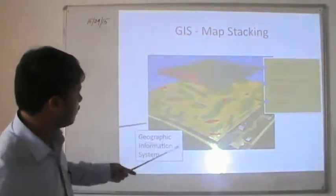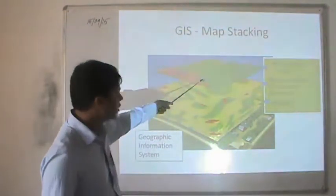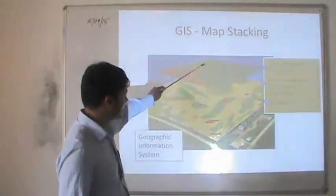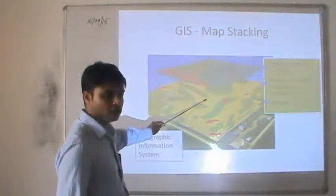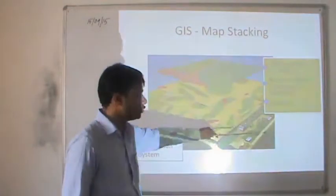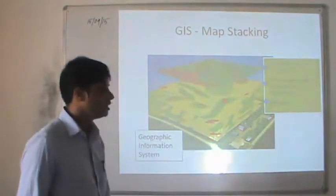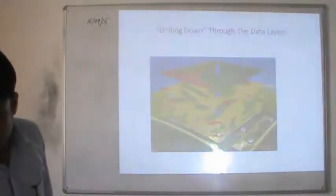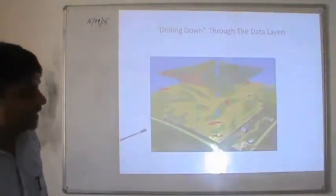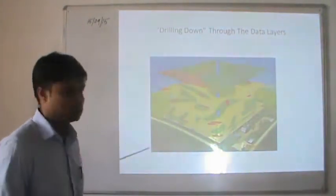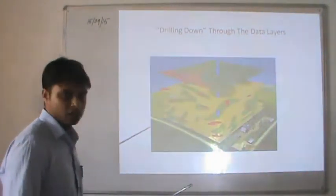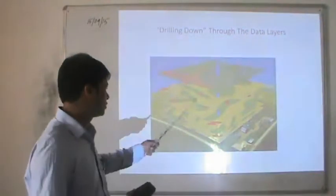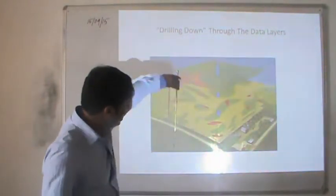GIS follows a drilling-down approach, processing data layer by layer. When searching a spatial area of the Earth, it goes down layer by layer — estimating the area of a photo layer, then a pH layer — all estimated in a given map area. This layered approach is the core of the GIS process.